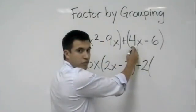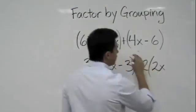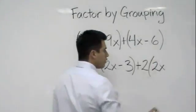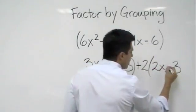And 2 times what will give me 4x? That would be 2x. And then 2 times what gives me a 6? Well, that would be a 3. And remember, we still keep this sign and we put it right here.